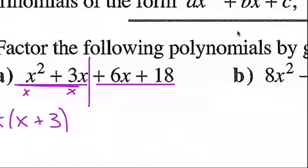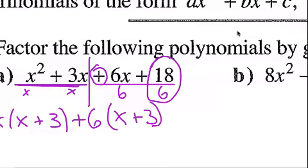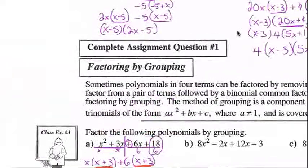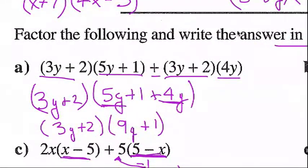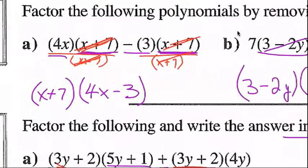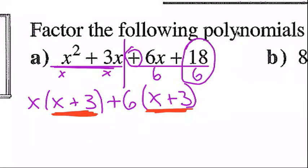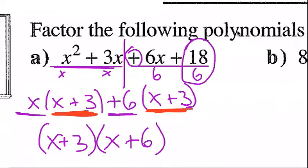For the second group, 6x and 18: the GCF is 6, so I factor out a positive 6, giving 6(x + 3). With factor by grouping, you know you've done the first step correctly if the binomials inside are the same — if they aren't, something's wrong and you need to back up. Now (x + 3) is the common factor. Factoring it out, I'm left with x + 6. Final answer: (x + 3)(x + 6).